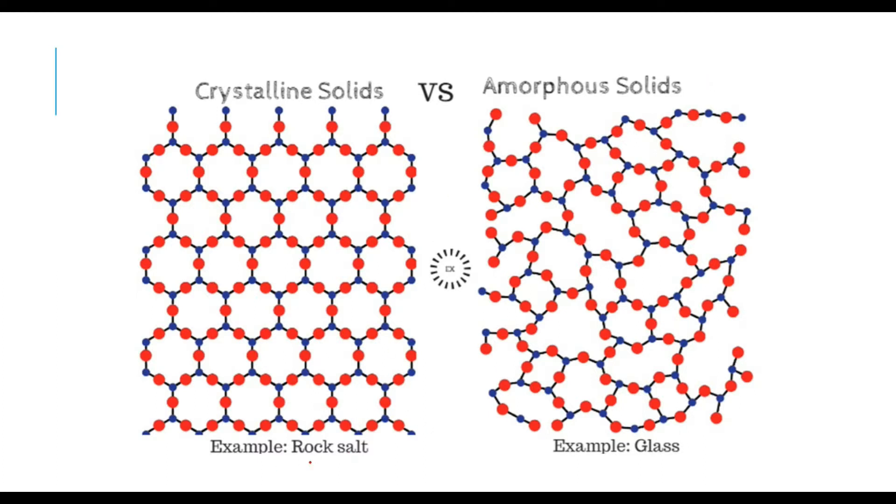With the help of this example you can understand the essence of this topic. For example, take rock salt. If you see the lattice of rock salt, you will find that all the atoms, all the unit cells are arranged in a periodic fashion, whereas if you see amorphous solids, for example glass, they are not at all arranged in a sophisticated manner or periodic fashion.